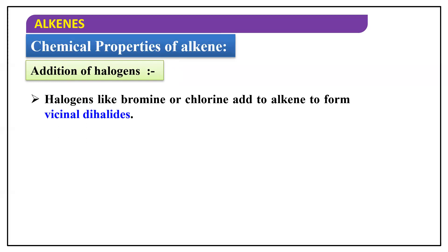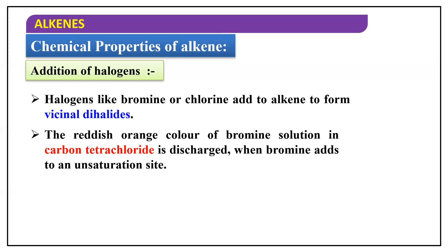Halogens like bromine or chlorine add to an alkene to form vicinal dihalides. Remember we studied two kinds of dihalides: vicinal dihalide and geminal dihalide. Make sure you practice these concepts regularly after each lecture so you retain them in memory.